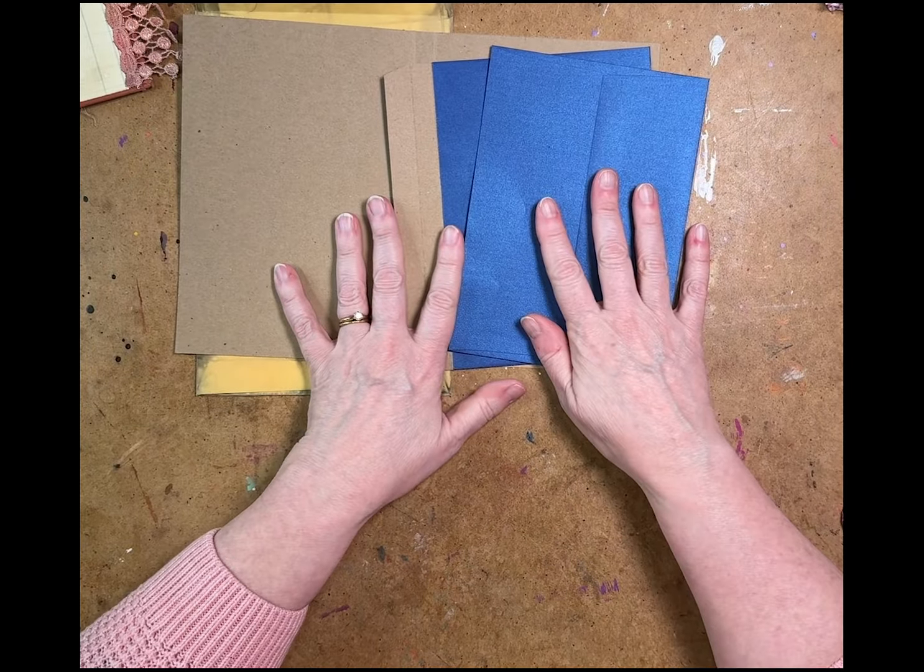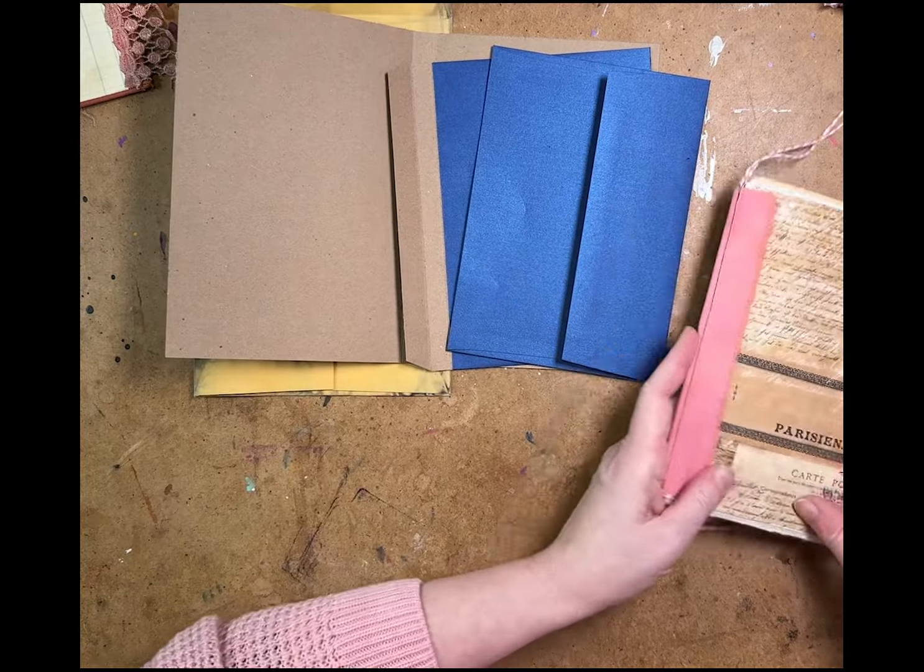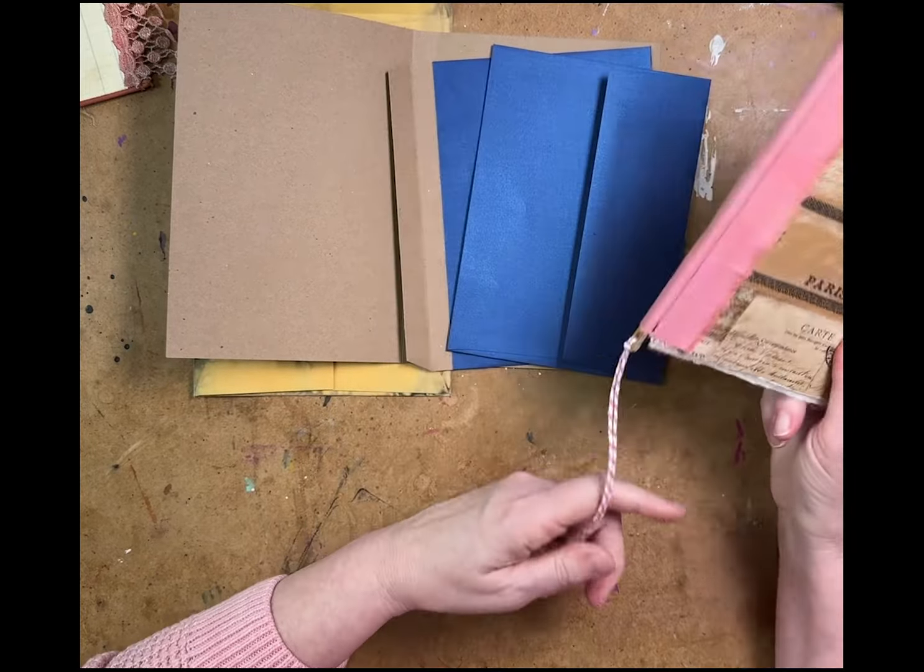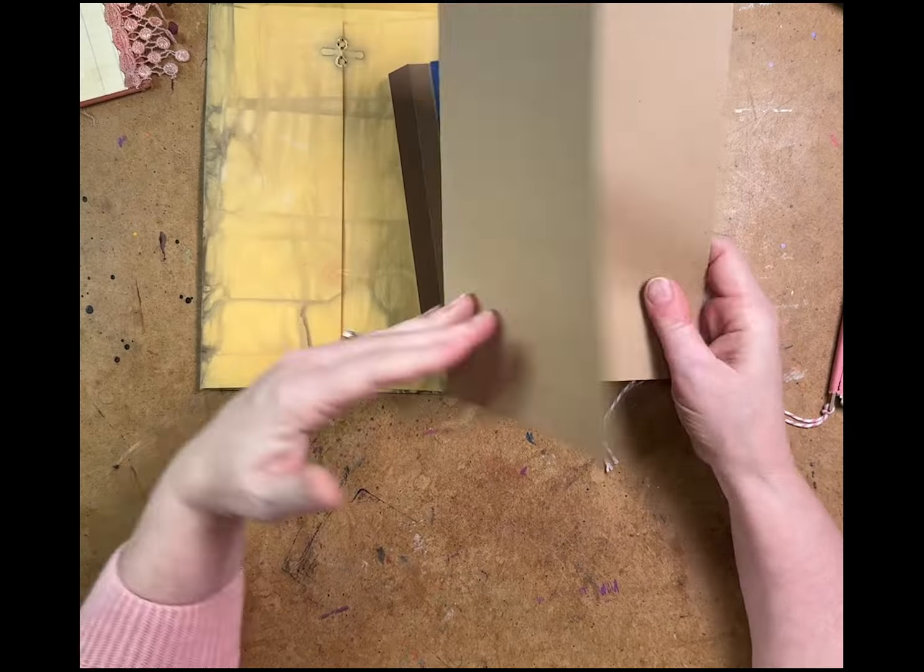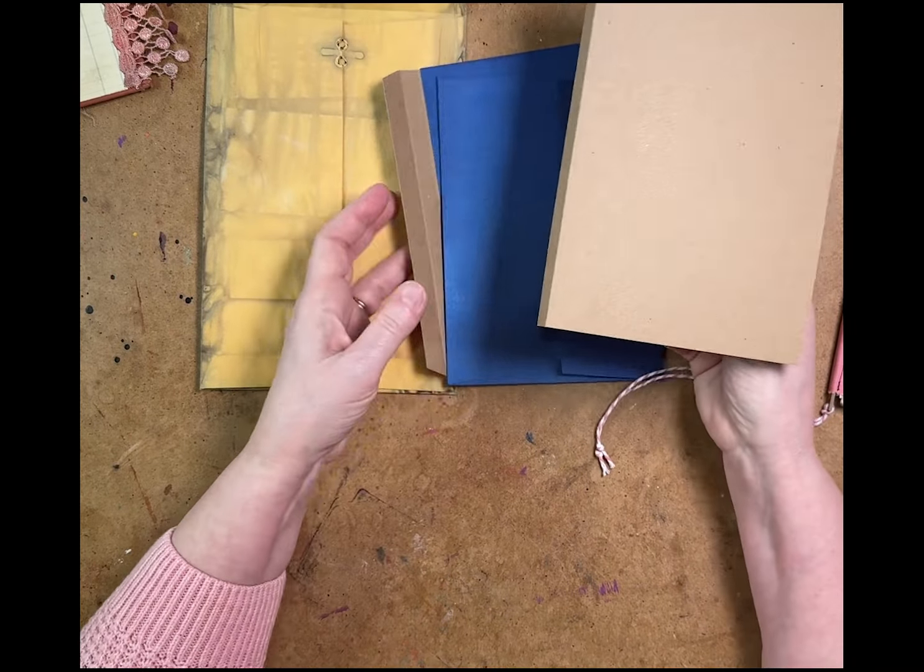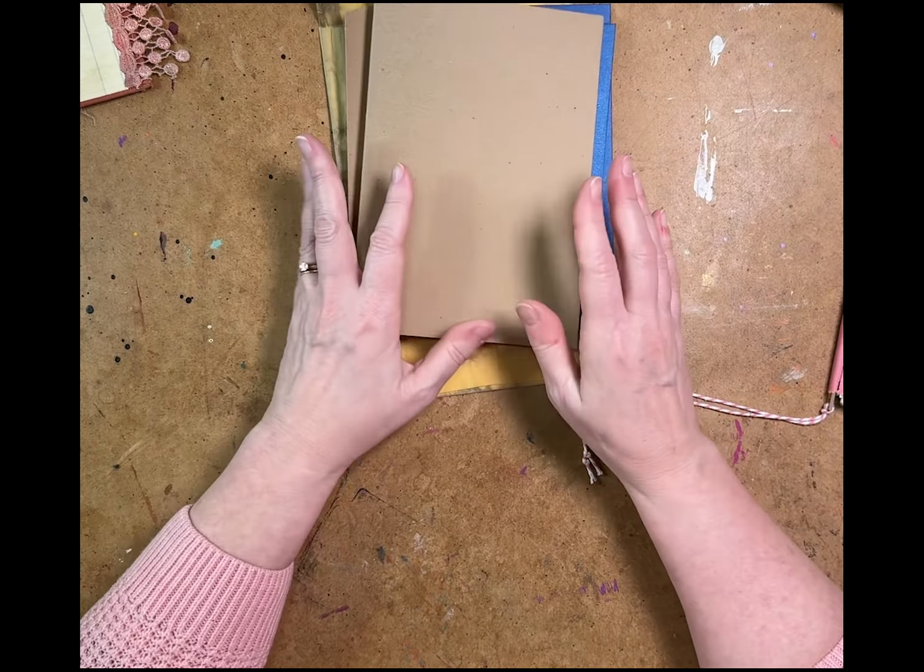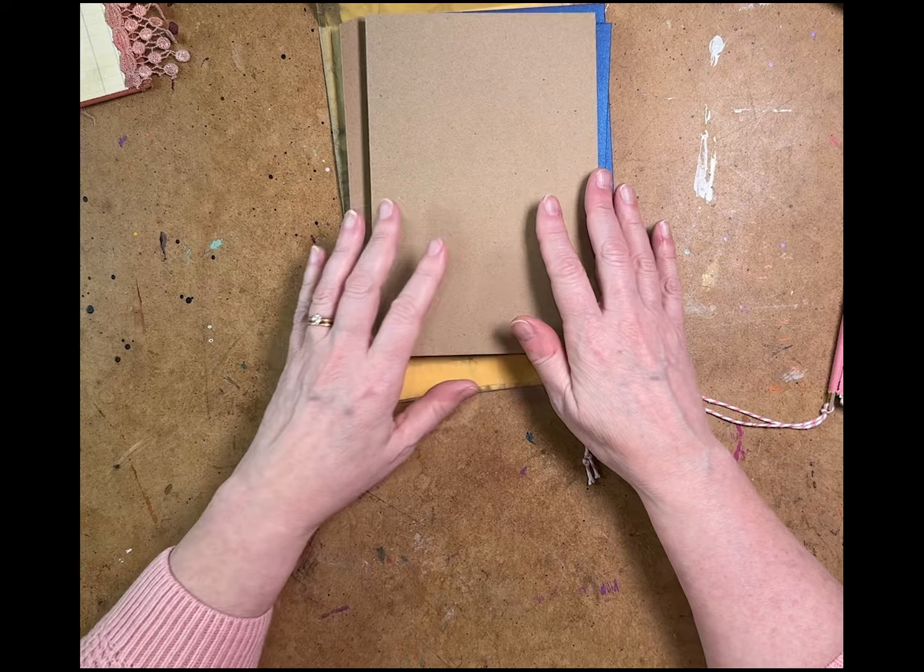So anyway, super quick and easy, but a great way to add a little bit to your detachable signatures to go in your journal by making them a jacket. Have fun with these. Thanks a bunch. Bye.